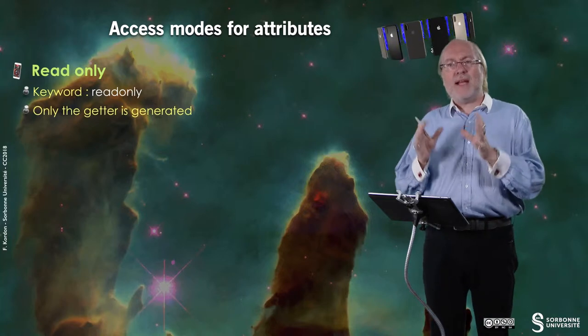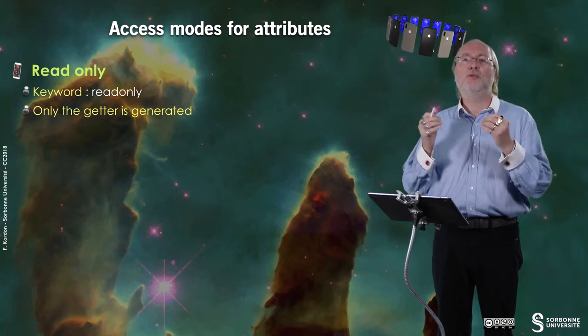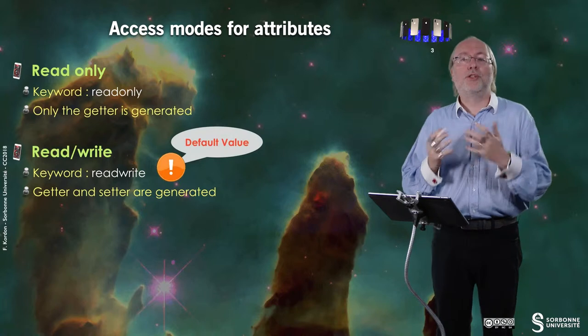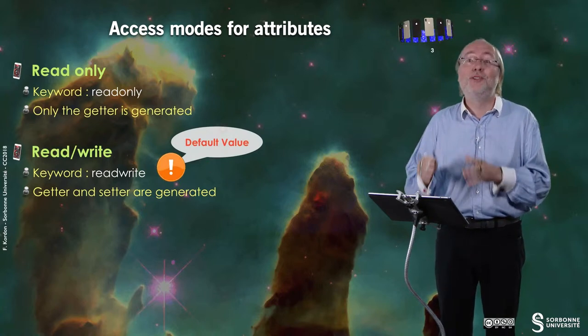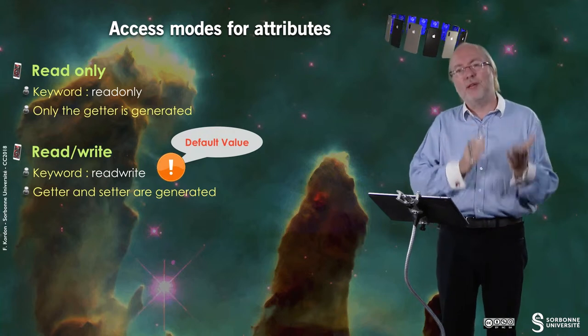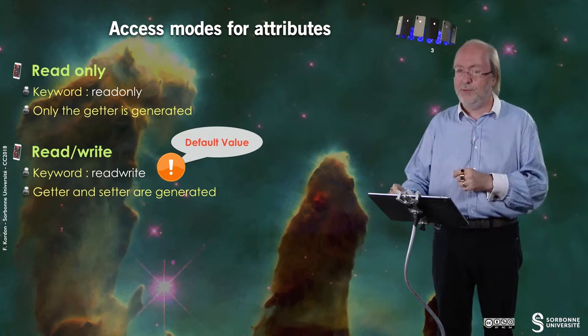Let's look at the access modes for attributes. The first access mode is read-only — the keyword is 'readonly' — and if you specify that an attribute is read-only, only the getter is generated; you cannot have any setter. The second mode, which is in fact the default if you don't specify anything — though I encourage you to always specify all modes and all behavioral characterizations for every attribute — is read-write, and then you will get both the getter and the setter automatically generated in the .m file. Otherwise, you must implement them manually.